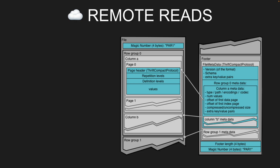In the footer of the file, we have the metadata: the version, extra key-value metadata — this is where the geo-specific metadata goes — statistics about row groups, and at the very end is the length of that footer. When doing remote reads from S3, the first request gets the file size, which lets you do a range request for the last eight bytes. Once you have the last eight bytes, you know the footer length, and can make a third request for the footer.